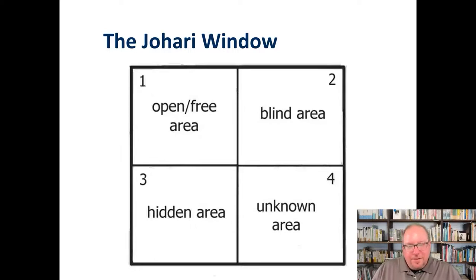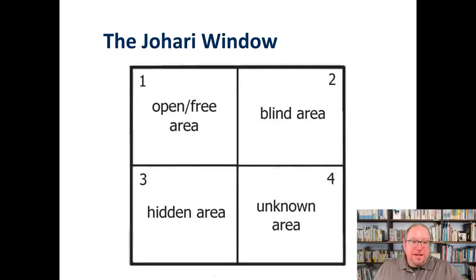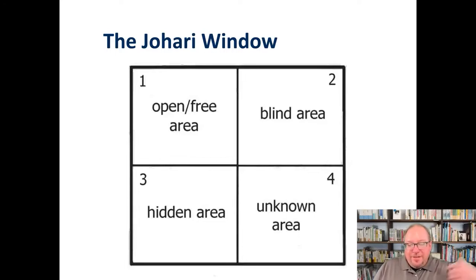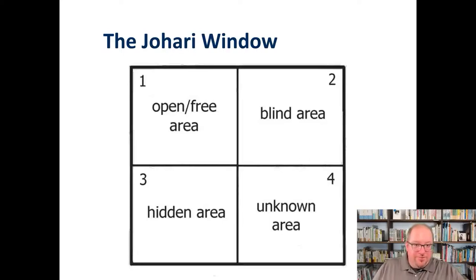The third area kind of flip-flops the blind area. These are things I know to be true about myself that I've kept hidden from other people. Maybe I'm an all-star singer with an angelic voice, but I don't like to sing in front of people so nobody knows it. I don't disclose that very often — so it's in my hidden area. These are things known to me but not to others, which is the flip-flop of the blind area.